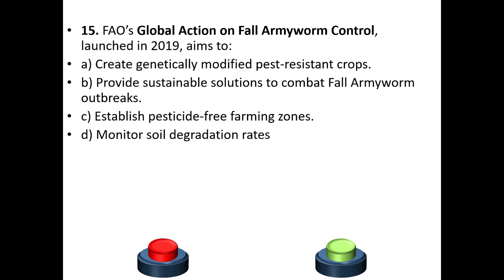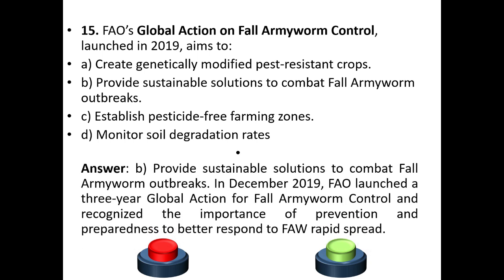Question 15: FAO's Global Action on Fall Army Worm Control, launched in 2019, aims to: a) create genetically modified pest-resistant crops, b) provide sustainable solutions to combat fall armyworm outbreaks, c) establish pesticide-free farming zones, or d) monitor soil degradation rates. The answer is option B. In December 2019, FAO launched a three-year Global Action for Fall Army Worm Control, recognizing the importance of prevention and preparedness to better respond to its rapid spread.